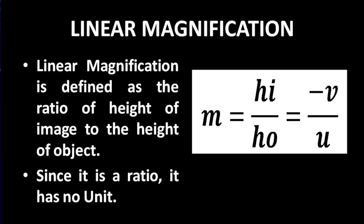Linear magnification is defined as the ratio of height of image to the height of object. Magnification is equal to HI upon HO, where HI is the height of image and HO is the height of object. Numerically, it is also equal to negative V upon U, where V is the image distance and U is the object distance.